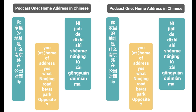Now let's look in more detail. We gave you the overall translation. Now, 你家 or 你家里 — how do you translate that? Essentially it means 'your home,' the place where you live. You can say 你家的地址 or 你家里的地址 — it's the same. And 地址 meaning 'address.'